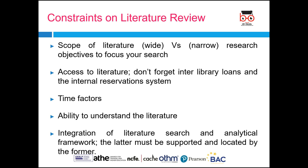Now let's look at the different constraints on literature review. It depends on whether the scope of the literature is wide or narrow — your research objectives guide you to focus. Then access to literature: if you have very limited access, make the best of what you have. If you need a journal article, you can write to us and we will provide it. Then time factors are very, very important. When you do a research project, you need to prepare a research plan — when you will complete chapter 1, chapter 2, chapter 3. Your literature review is dependent on how much time you have.